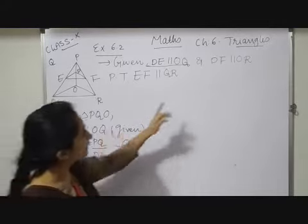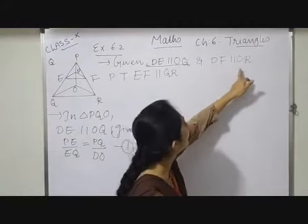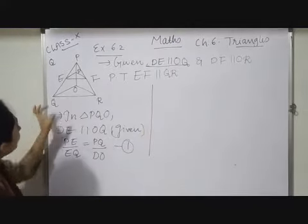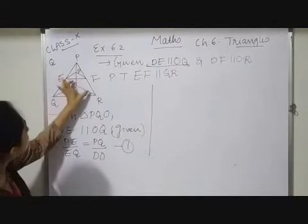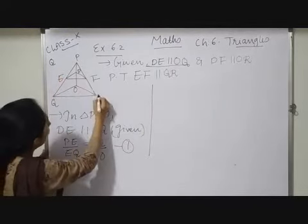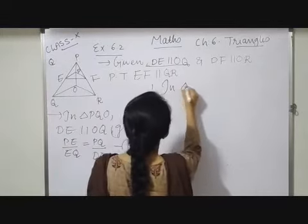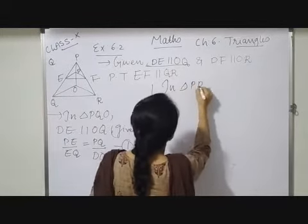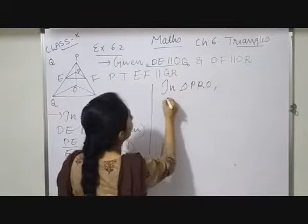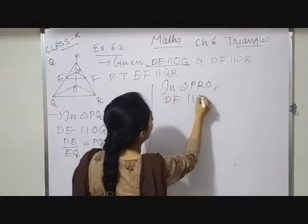Now, the second thing. They have given DF parallel OR. DF parallel OR is a part of triangle PRO. So here I am taking triangle PRO, and it is given that DF parallel OR.